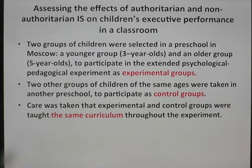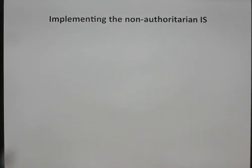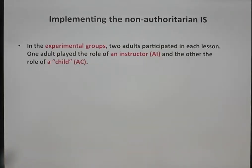Care was taken that experimental and control groups were taught the same curriculum throughout the experiment. In order to implement the non-authoritarian interactive style in the experimental groups, two adults participated in each lesson: one adult played the role of an instructor — the adult instructor — and the other played the role of a child — the adult child.